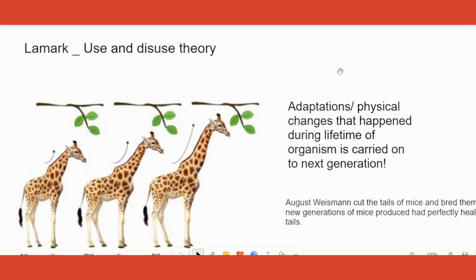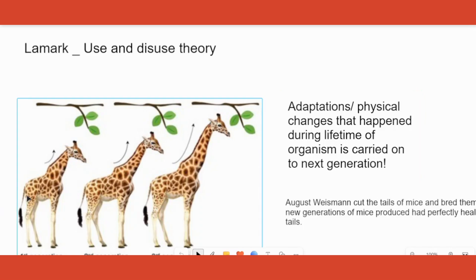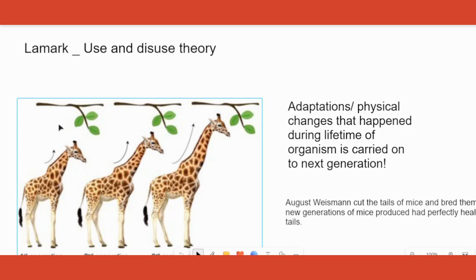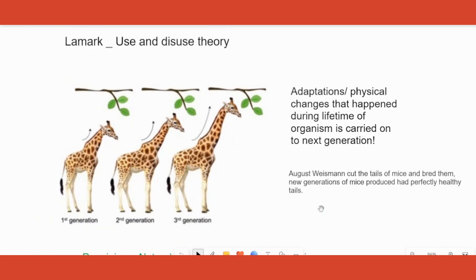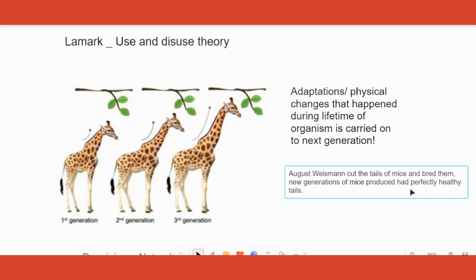What does Lamarck's theory mean? It means that adaptations or physical changes that happen during the lifetime of an organism are carried on to the next generation. For example, the giraffe had to keep extending its neck to get leaves for food, and because of that extension the giraffe got a longer neck. However, another scientist, August Weismann, disproved this theory.